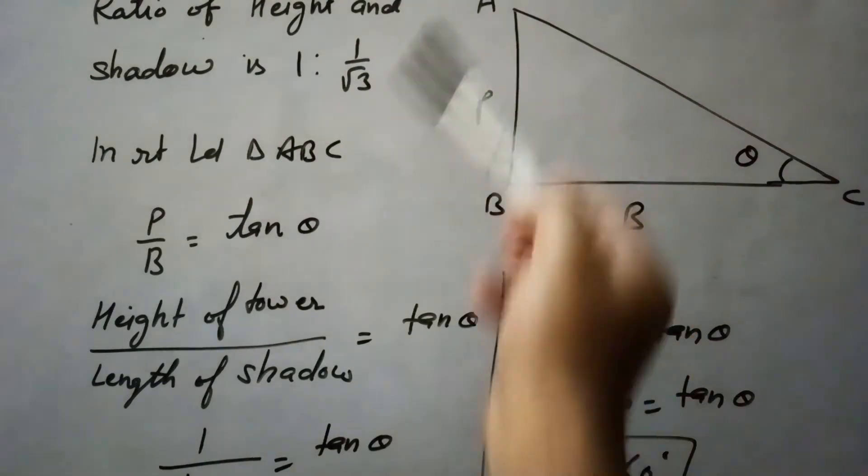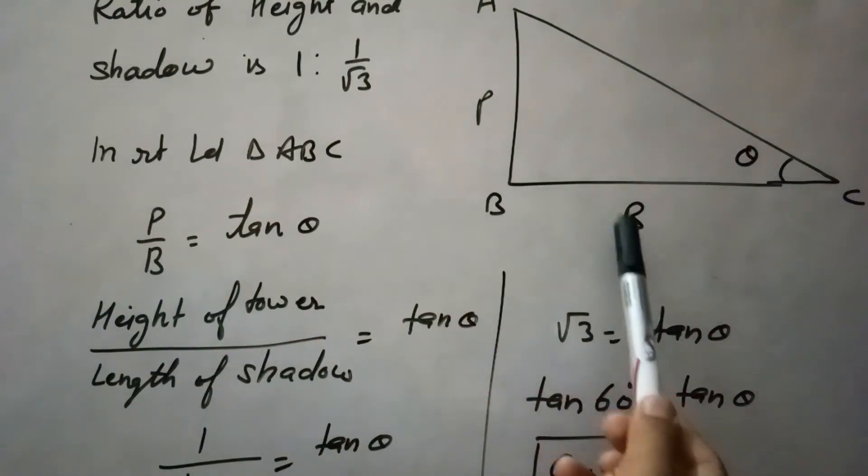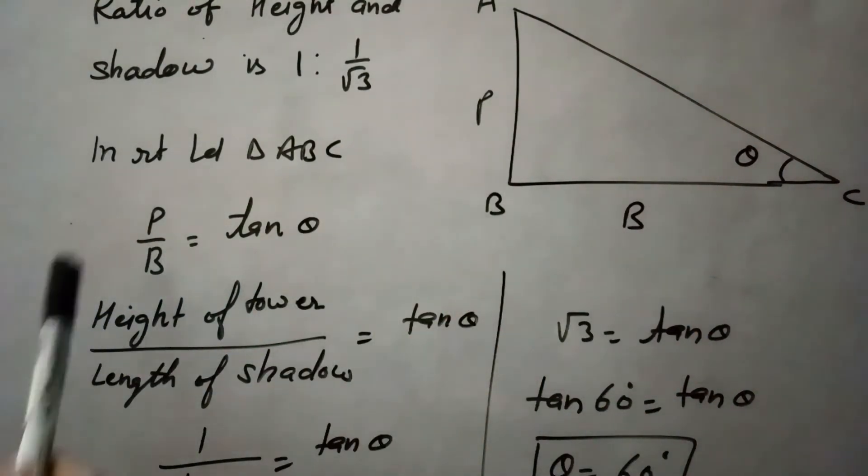In right angle triangle ABC, perpendicular over base equals to tan theta. Perpendicular is height of the tower and base is length of the shadow which equals to tan theta.